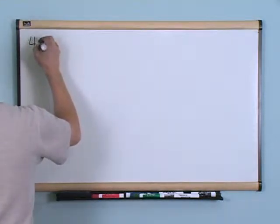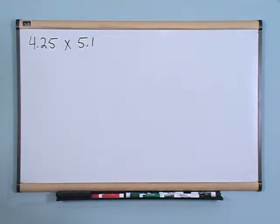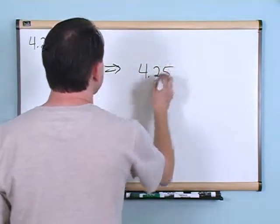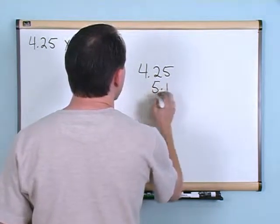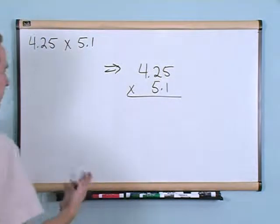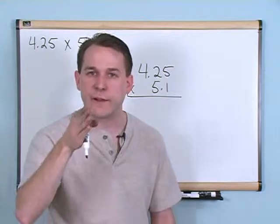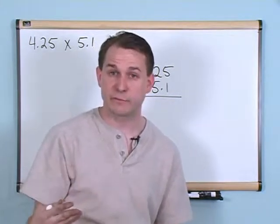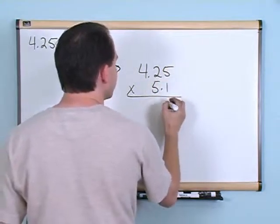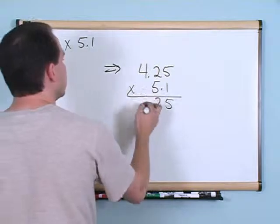We're going to do one more multiplication problem. What if you had 4.25 times 5.1 — two decimals multiplied together? You go ahead and write 4.25 on top and 5.1 on the bottom. Notice it's not necessary to line the decimals up when multiplying. You can just write the numbers and put your decimal wherever — you don't need to line them up because you're not going to drag that decimal down like you do when adding or subtracting.